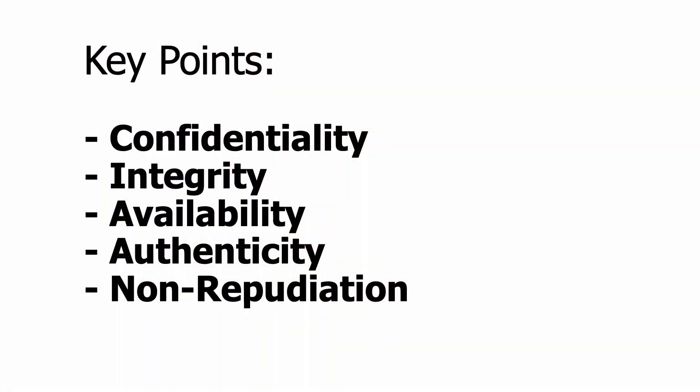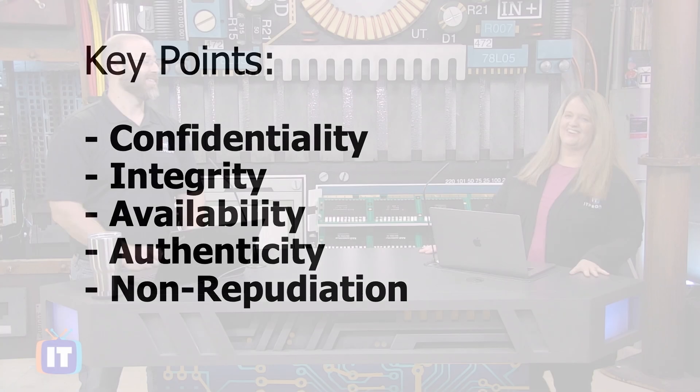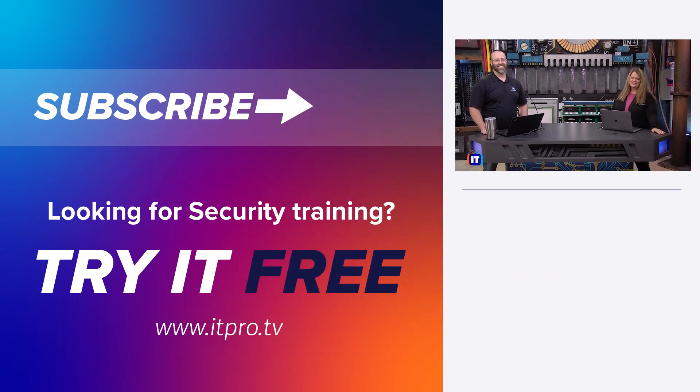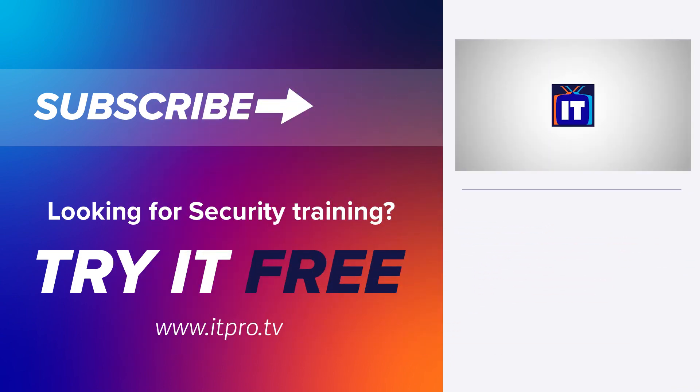Thanks for hanging out with us. What we learned today is the CIA triad, or the Iron Triangle — confidentiality, integrity, and availability — plus the two additional elements: authenticity and non-repudiation. We hope to see you again soon. Thank you for watching ITProTV.